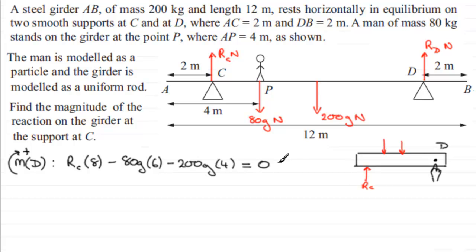So it's just now a simple case of solving this equation for the force RC. So if we tidy this up, what we therefore have is 8RC here, and then if we work out minus 80G times 6 and then minus 200G times 4, you'll find you get minus 1280G, and that's going to equal zero. So if we add this term 1280G to both sides and then divide both sides by 8, you're going to get RC equals 1280G divided by 8, and if you work that out, you get exactly 160G.